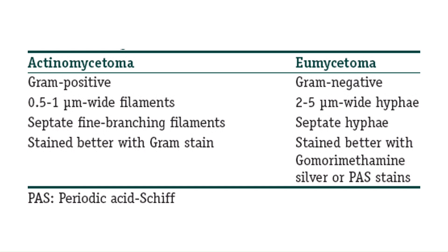Differentiating Actinomycetoma from Eumycetoma: Actinomycetoma is caused by bacteria and gives a gram-positive culture with filaments 0.5 to 1 micrometer wide. In Eumycetoma, caused by fungi, the filament size is 2 to 5 micrometers.